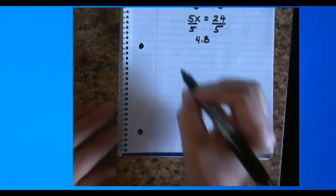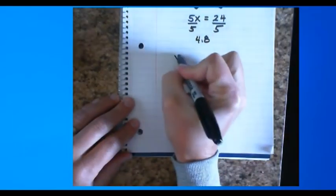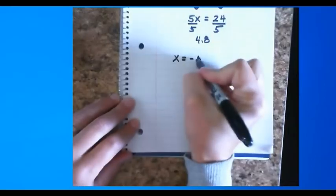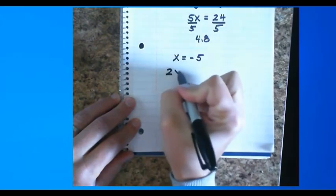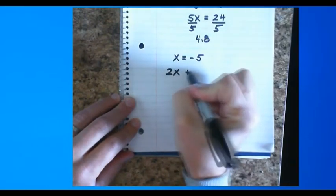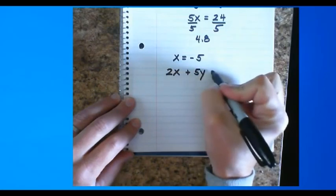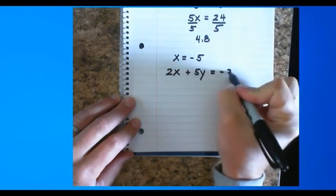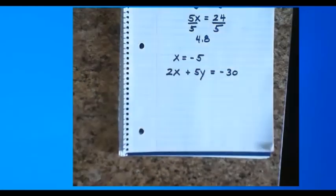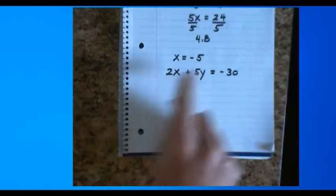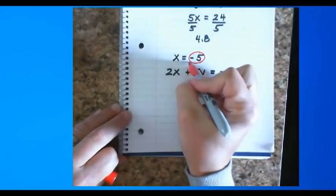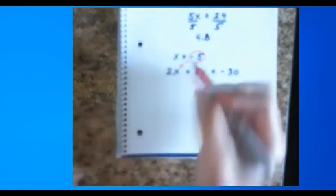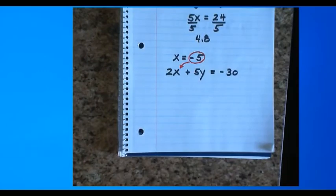Let's go with x equals negative 5. And we're gonna plug that into 2x plus 5y equals negative 30. I gave you an x. So we're gonna take that x and we're gonna plug it in right there. If you're doing this at home, go ahead and pause it and come back. If you're doing it live, I'll pause it for you in a moment.